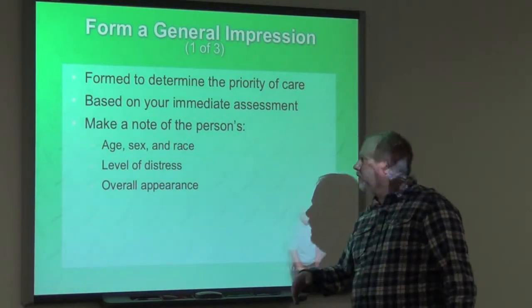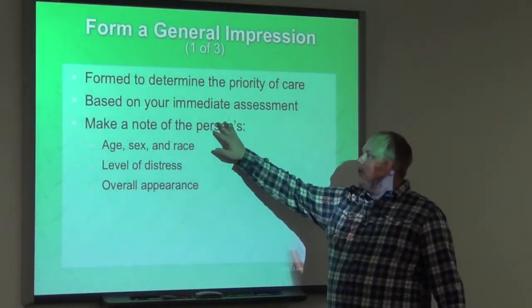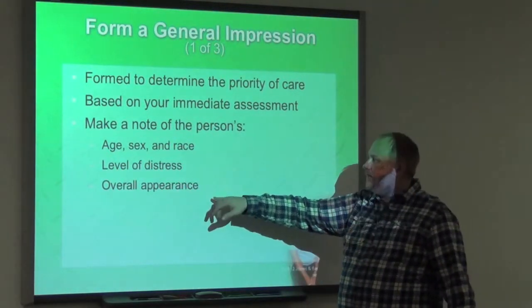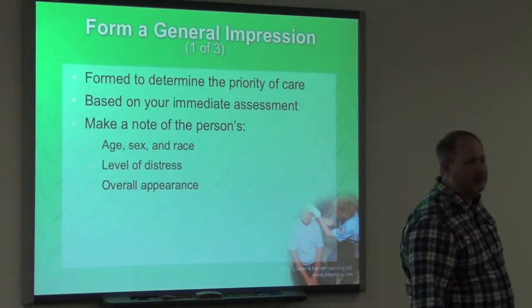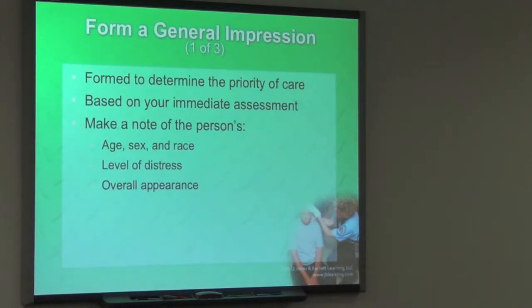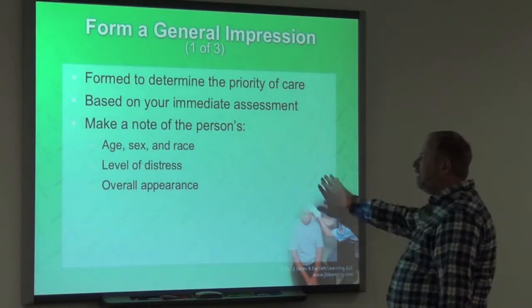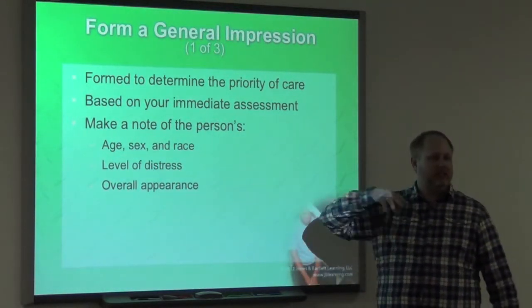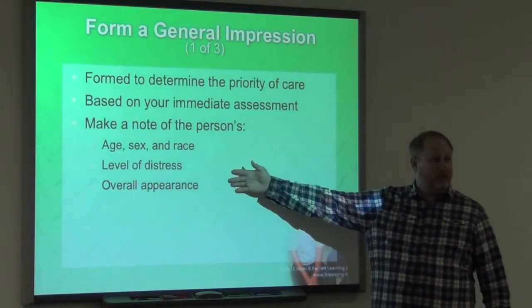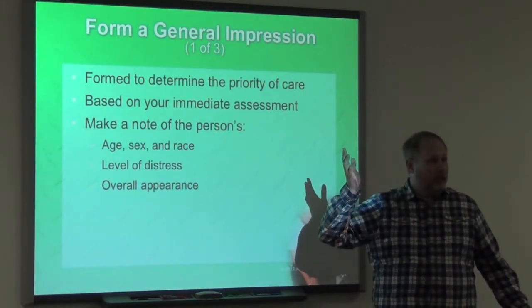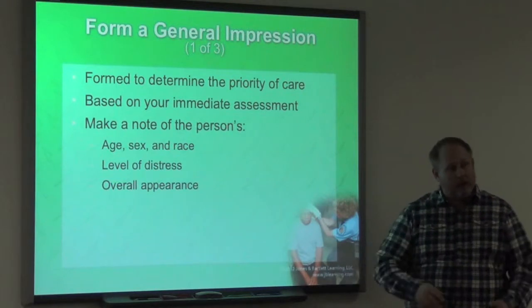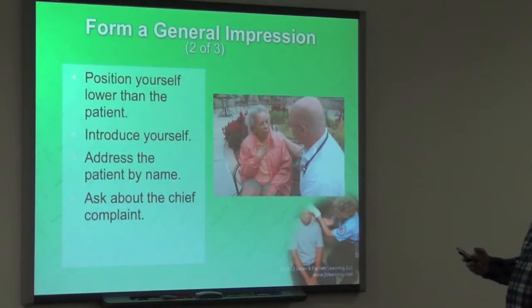We're going to use that information. We make notes of the person's age, sex, and race, their level of distress, and their overall appearance — just general things. It doesn't have to be exact. You may not know the exact age, but you may know approximately. There's a difference between an 80-year-old who fell down stairs versus a 16-year-old who fell down two stairs — an 80-year-old could break a hip, while a 16-year-old likely wouldn't fare as badly.